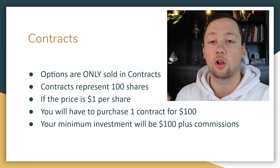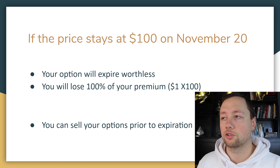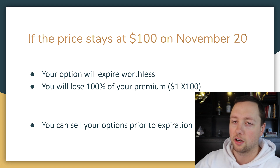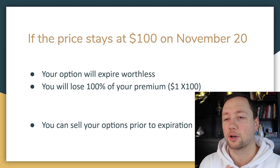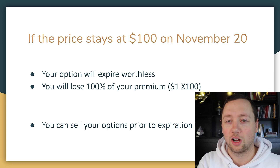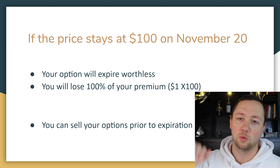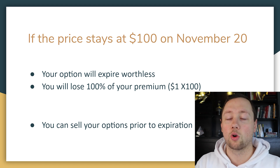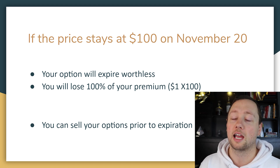Let's look at a couple of examples. Say the price stays at $100 on November 20th — the price has not gone up at all. You spent $100 buying one contract giving you the ability to purchase Apple at $110 on that day. Nobody is going to execute that contract because the shares are only worth $100 — why would you ever pay $110? Your options have expired, your premium is now worthless, and your entire initial investment has gone to zero.